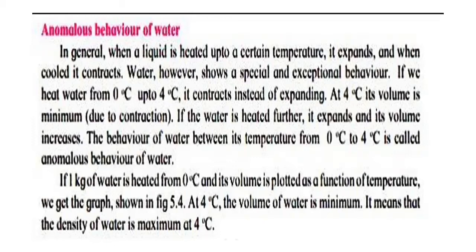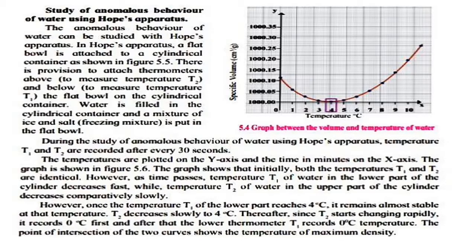If 1 kg of water is heated from 0 degrees Celsius and its volume is plotted as a function of temperature, we get a graph as shown in the figure. The volume of water is minimum at 4 degrees Celsius, which means the density of water is maximum at 4 degrees Celsius.